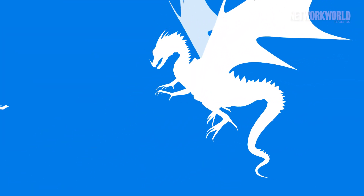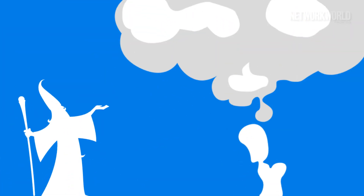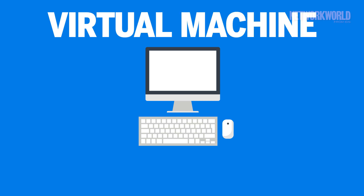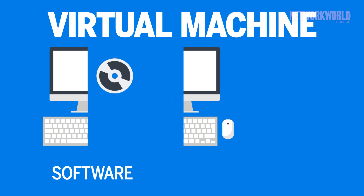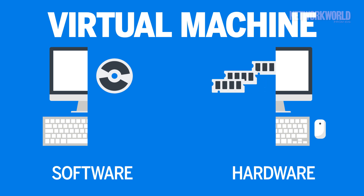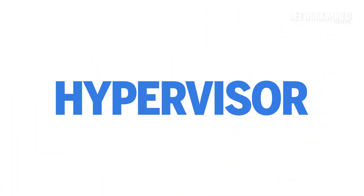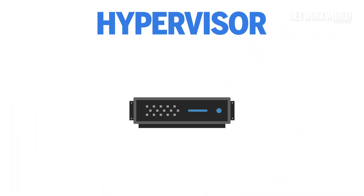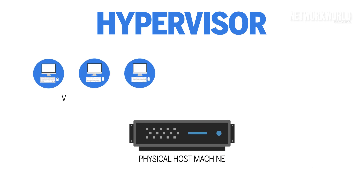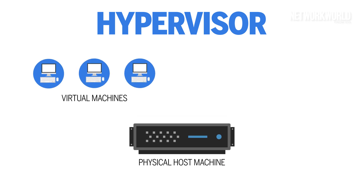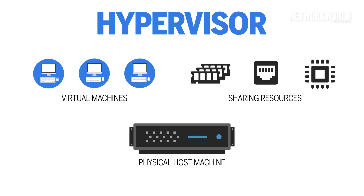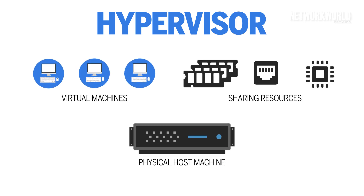Virtualization is the act of making something appear real when in reality it doesn't exist. In the world of computers, a virtual machine is created when software separates the operating system and its applications from the physical computer hardware. This software process is called a hypervisor. The hypervisor then lets a physical host machine operate multiple virtual machines as guests, sharing computing resources such as memory, network bandwidth, and CPU cycles.